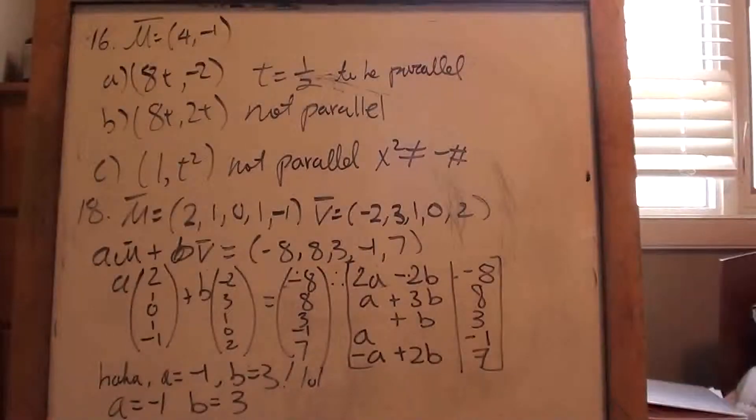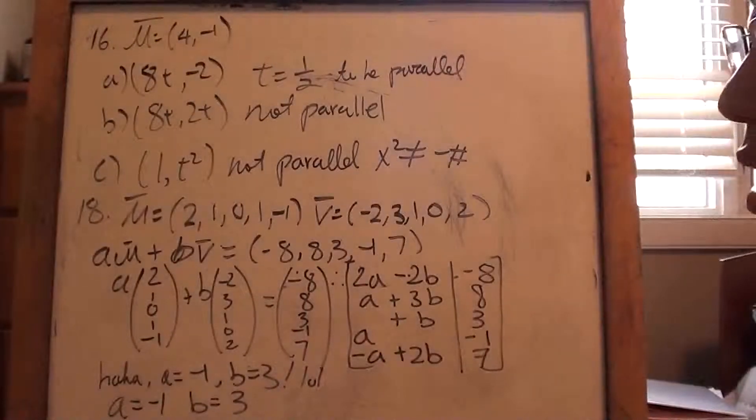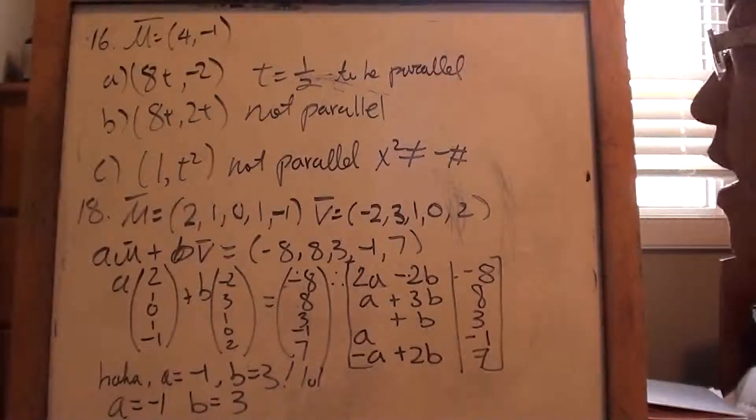Alright, so moving on. This is part B for linear algebra 3.1. We're almost done, folks. Actually, who am I kidding? I'm not done.